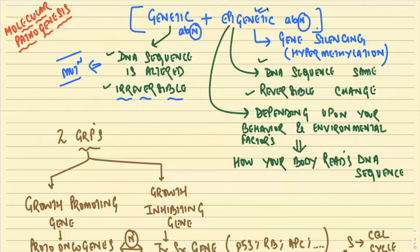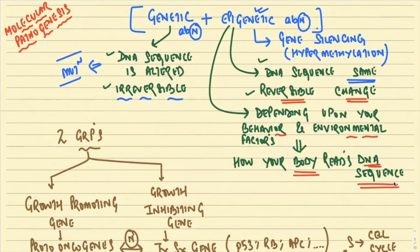There is also something called epigenetic abnormality. In epigenetic abnormality, the DNA sequence remains the same — it is a reversible change. What happens is that depending on our body habits, behavior, and environment, the epigenetic factor plays a role — it is about how our body reads the particular DNA sequence. So in epigenetic abnormality, there is a gene silencing: the gene is not able to express itself. Why? Because of hypermethylation of that particular gene.